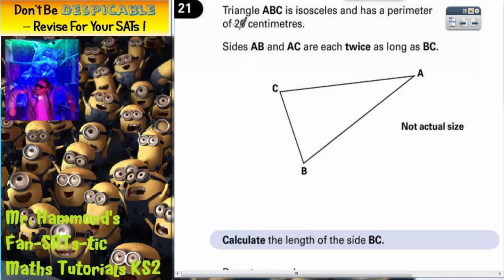Question 21. Triangle ABC is isosceles and has a perimeter of 20 centimeters. Sides AB and AC are each twice as long as BC.